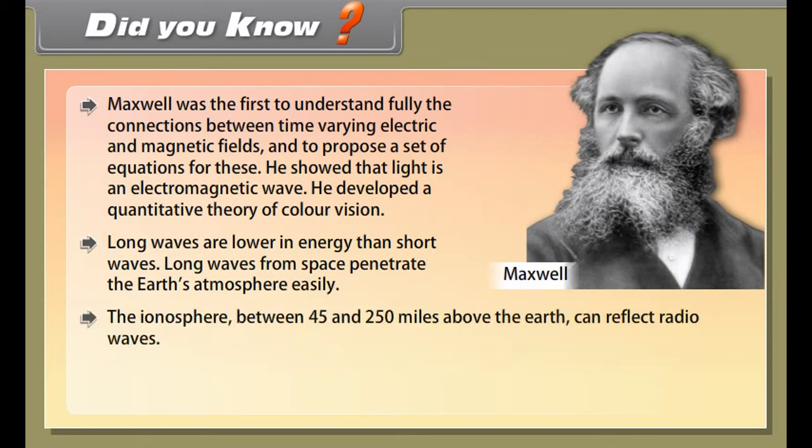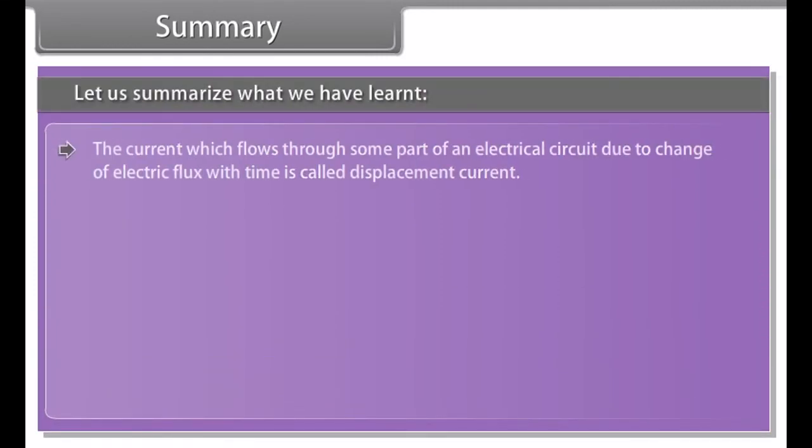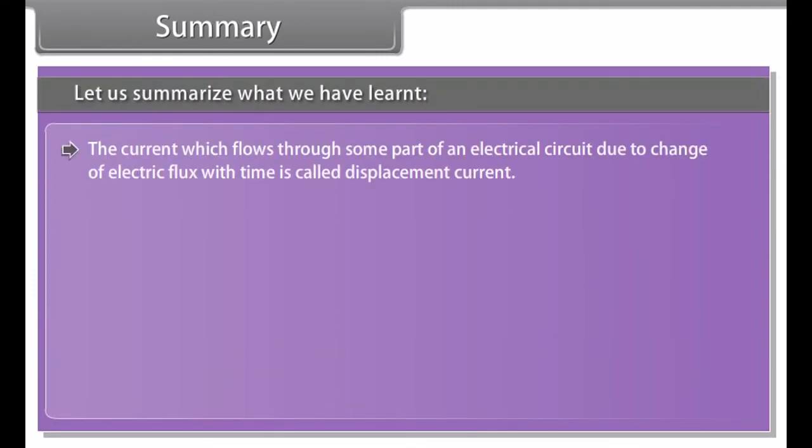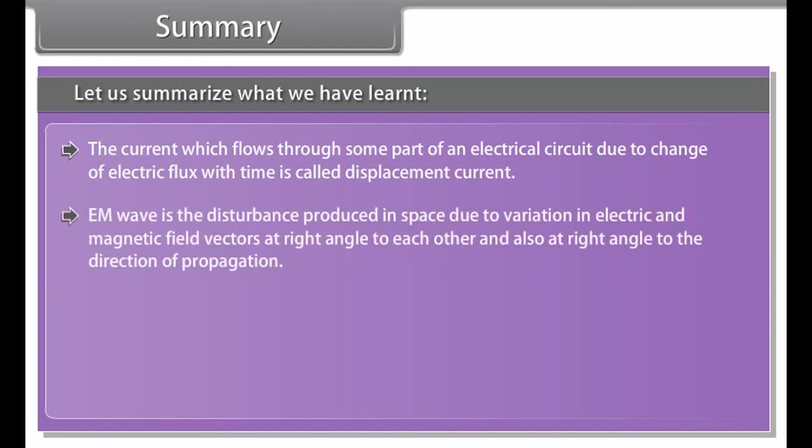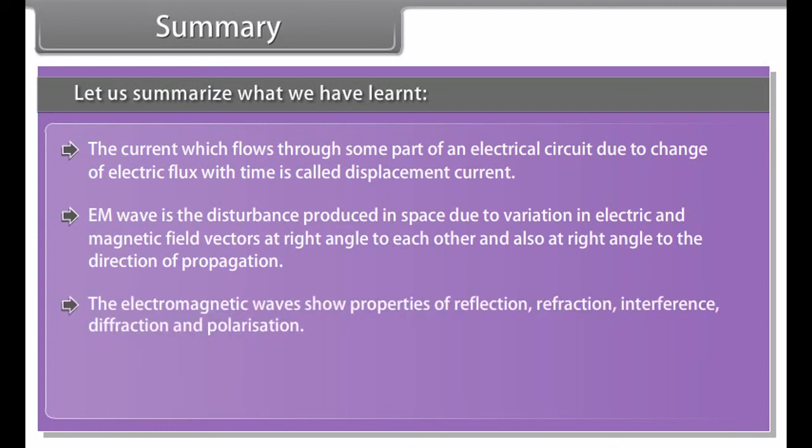Gamma rays. These electromagnetic waves are of nuclear origin. Gamma rays lie in the upper frequency range of the electromagnetic spectrum and have wavelengths from about 10 raised to the power minus 10 meter to less than 10 raised to the power minus 14 meter. Gamma rays produced by many radioactive substances and are present in large quantities in nuclear reactors. These radiations are also emitted by radioactive nuclei. They are used in medicine to destroy cancer cells.